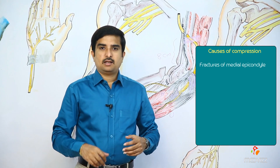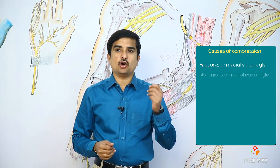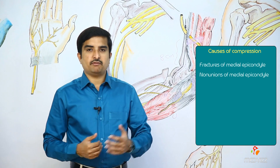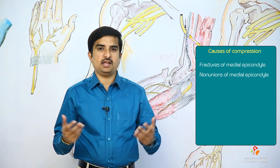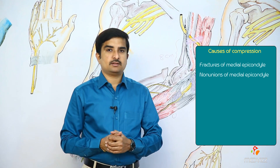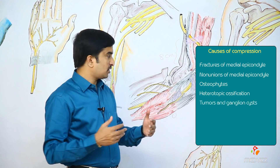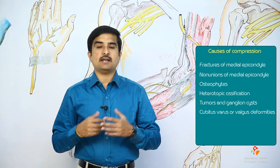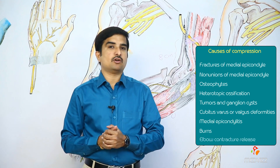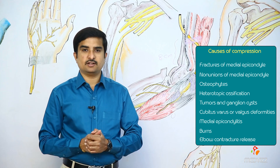After fractures of the medial epicondyle, another cause of compression may be non-union of the medial epicondyle with the shaft of the humerus due to a developmental anomaly. Additional causes include formation of osteophytes, hypertrophic ossification, tumors, presence of ganglion cysts, cubitus varus or valgus deformities, medial epicondylitis, burns, and elbow contracture release.